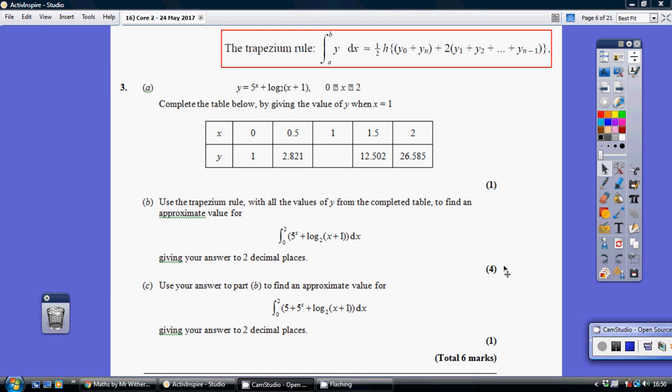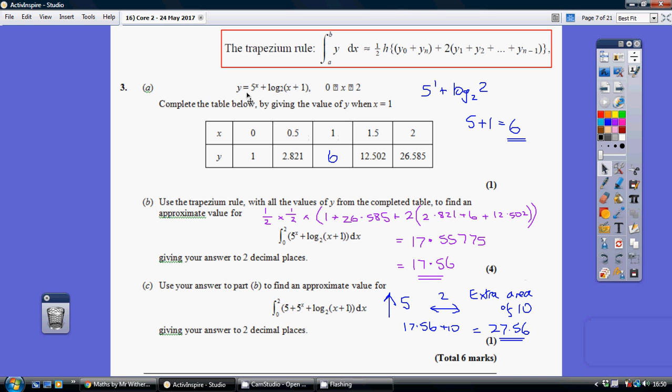Question 3. So for part A, complete the table below. We've just got to substitute 1 into this formula. So we're saying 5 to the power of 1 plus log to the base 2, 1 plus 1. Well, log 2 to the base 2 is 1. So we've basically got 5 to the power of 1, which is 5 plus 1 equaling 6.